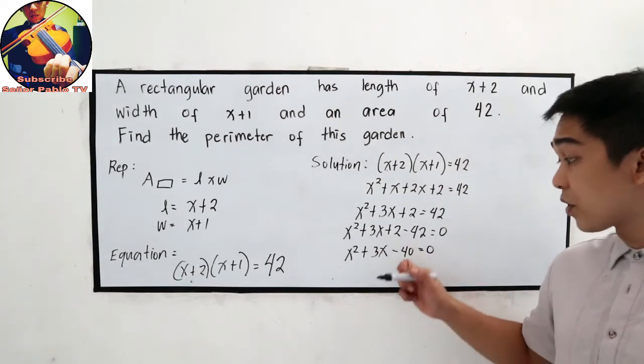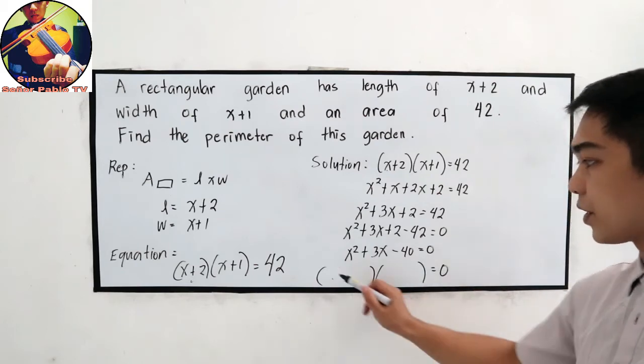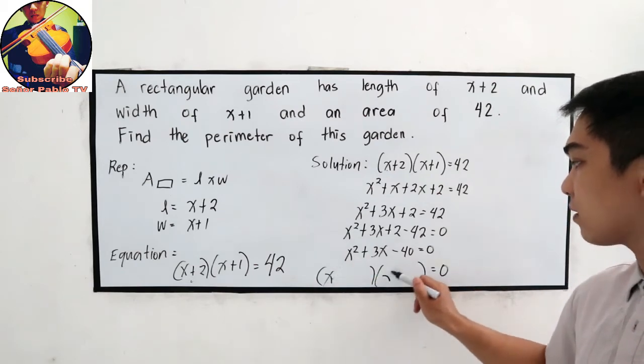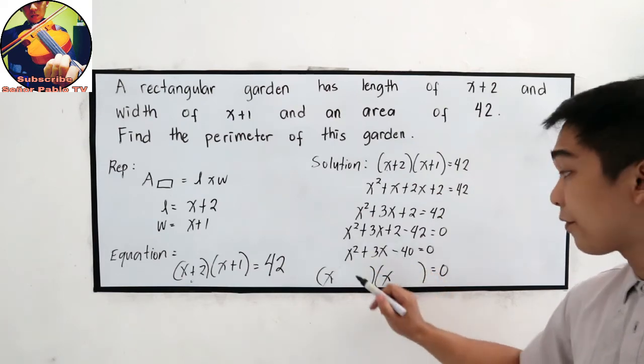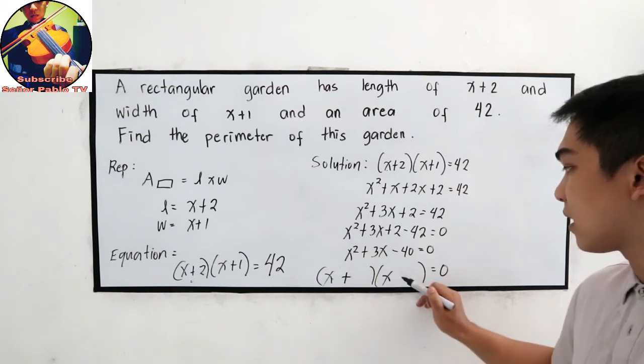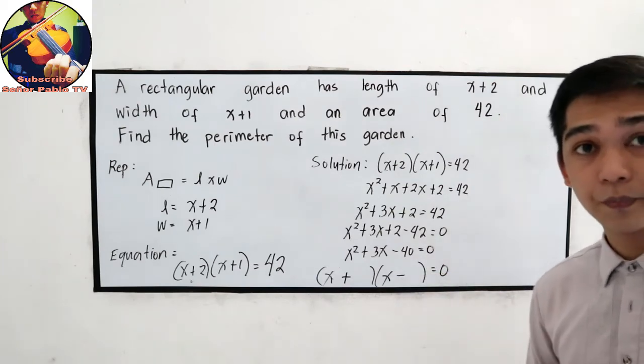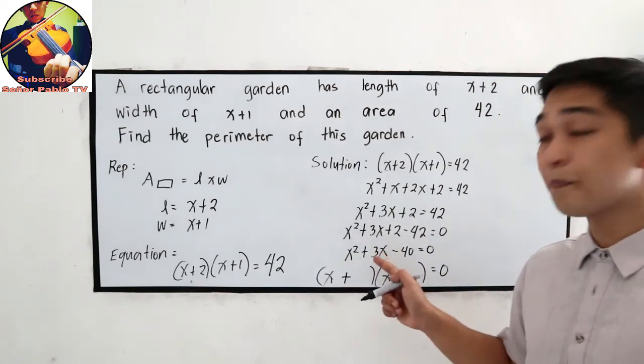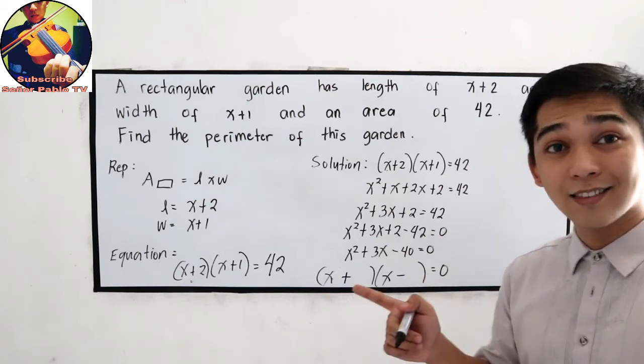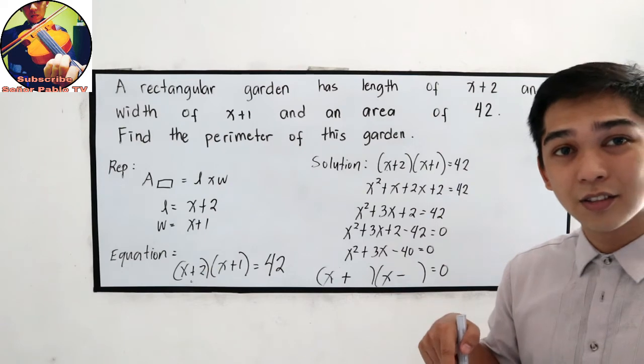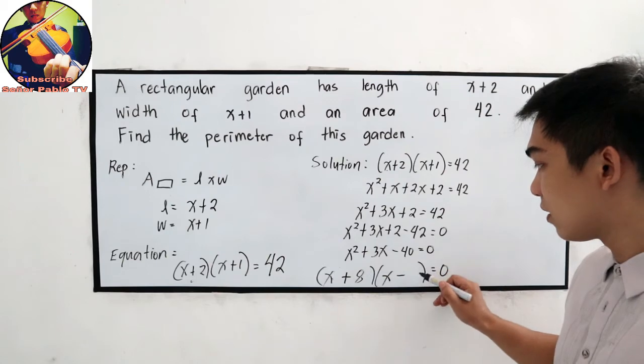And now let us find the factors of negative 40. So our factors, x and x, the factors of x squared. Since this is negative, so our factor has a sign of 1 positive and 1 negative. Factors of negative 40 now, the sum must be positive 3. That is 8 times 5. So which is positive? So we have positive 8 and negative 5.